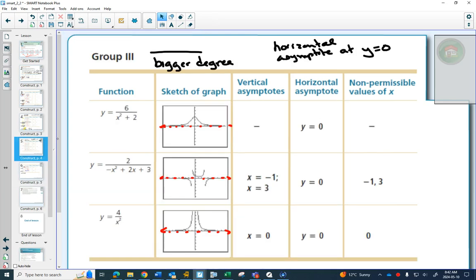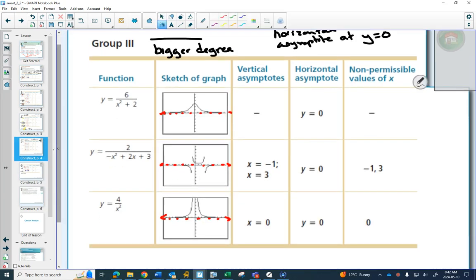So again, these graphs can look different depending on just the numbers that are given, but we're going to find out the process of making these is always the same. So again, in this one, I want you to know that your denominator is always positive. That's why that one has no non-permissible values.